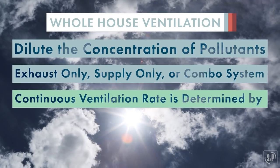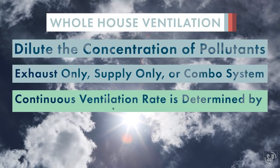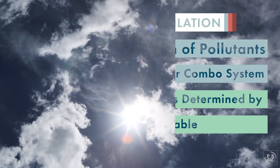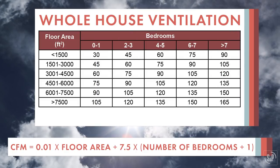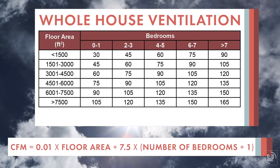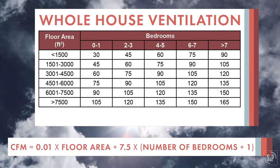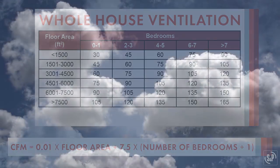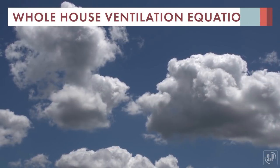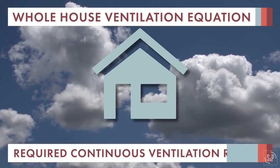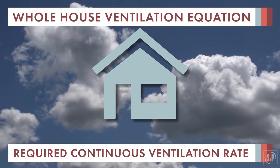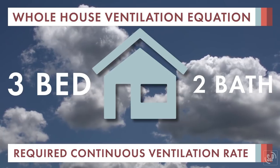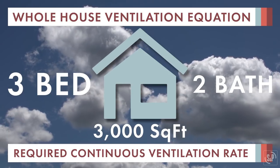The continuous ventilation rate is determined by either an equation or a table. This can be a little confusing for someone not familiar with these ventilation requirements, so let's do a quick example. Say you need to determine the required continuous ventilation rate for a standard three bedroom, two bath, three thousand square foot home.